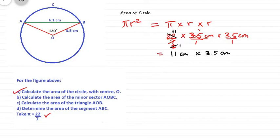And so we have 11 centimeters multiplied by 3.5 centimeters. Now 11 times 3.5 centimeters - 11 times 3 is 33, and the half of 11, that's the 0.5, is 5.5. And so that will give us 38.5. So our answer is 38.5 centimeters squared.